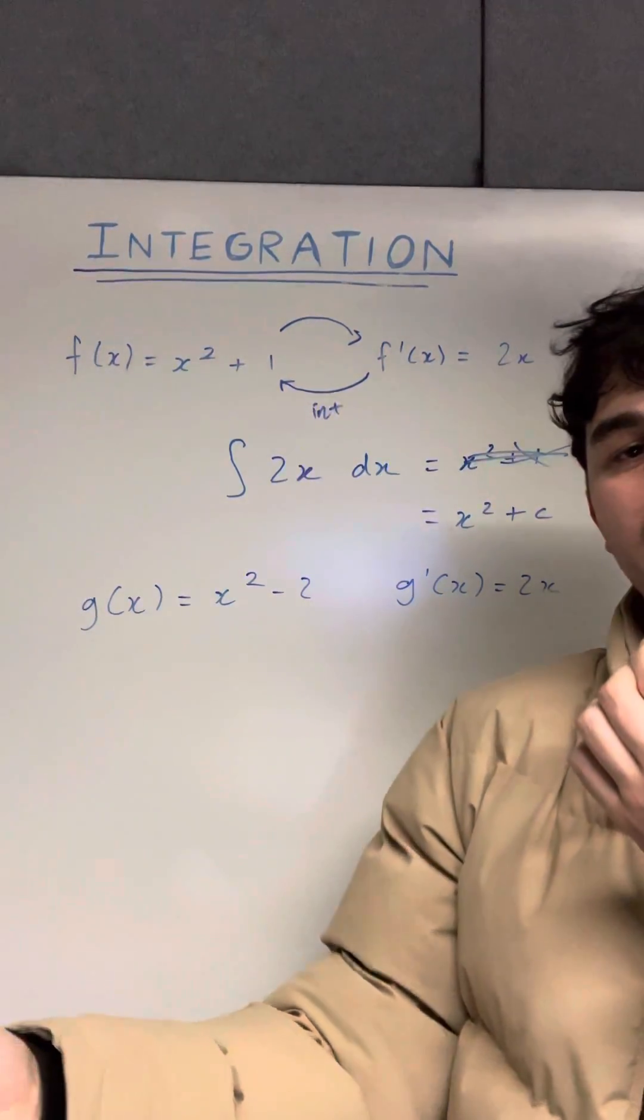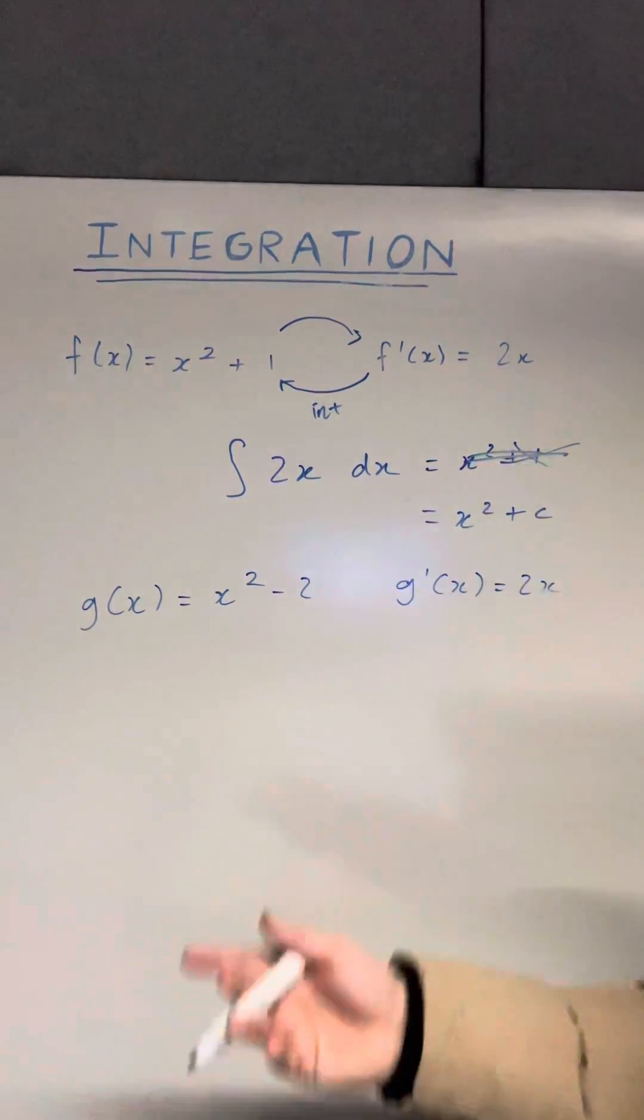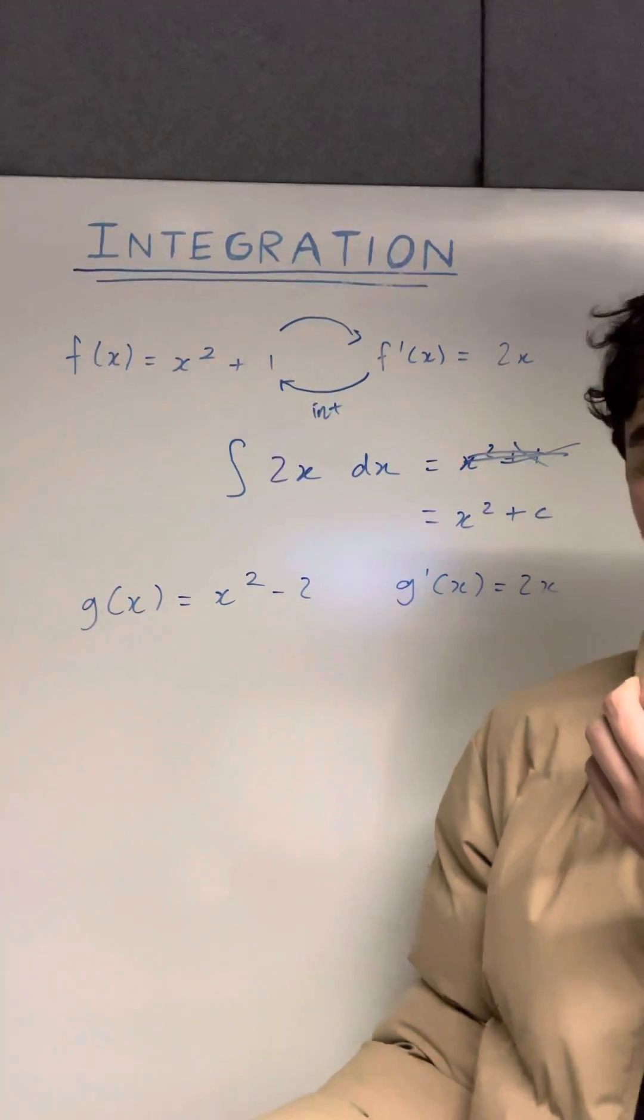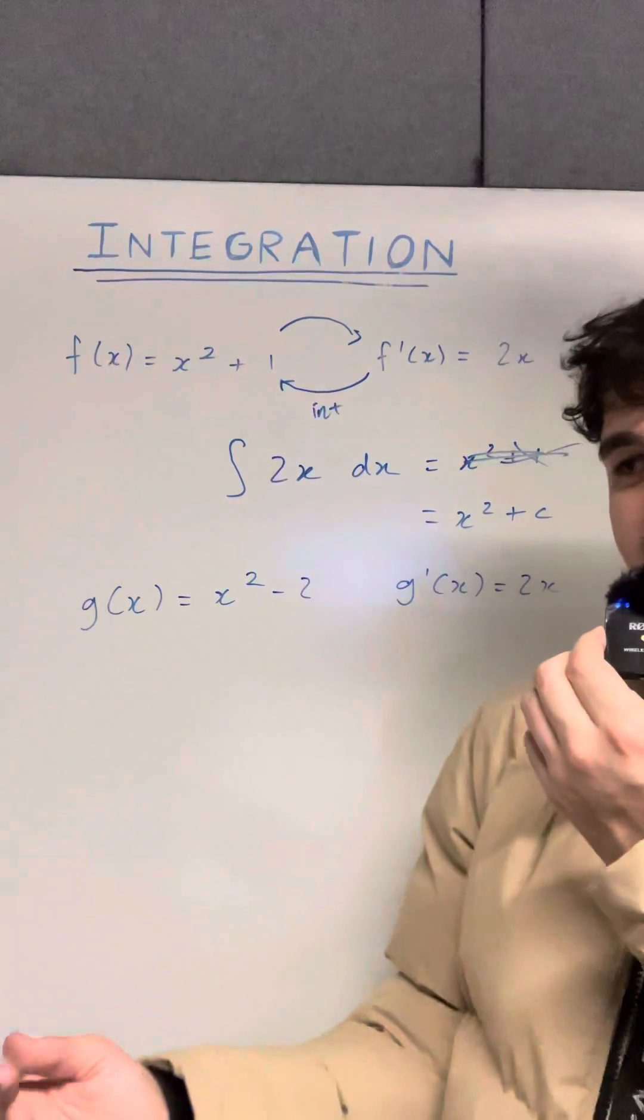Most of the time, this is just a coordinate that lies on the graph of f of x, or whatever function you're trying to find. Now, if you don't know any points or any extra piece of information, then you can't assume what the c is.